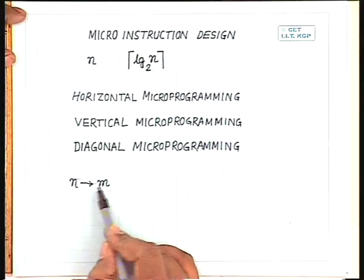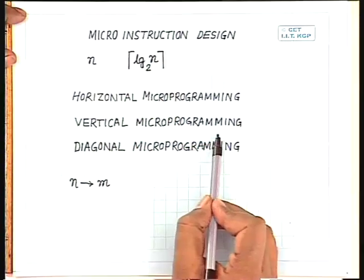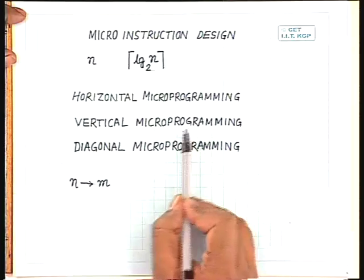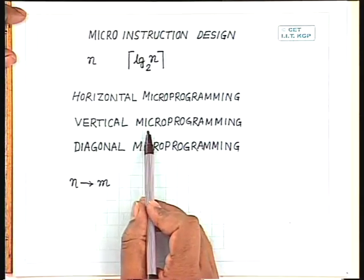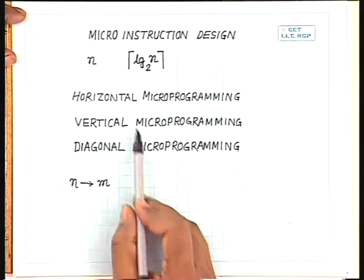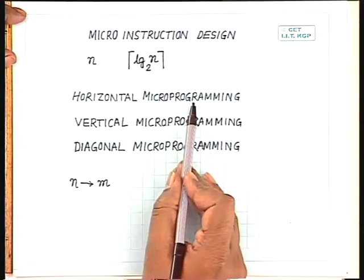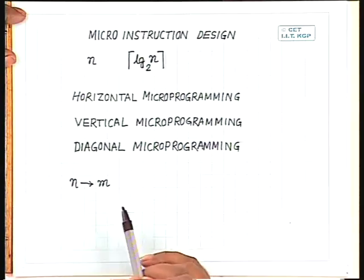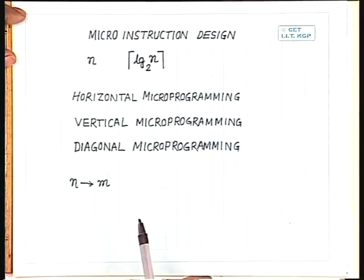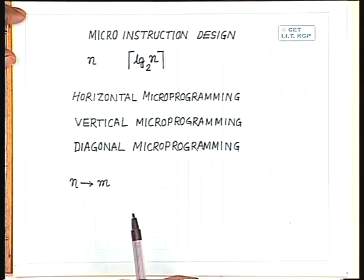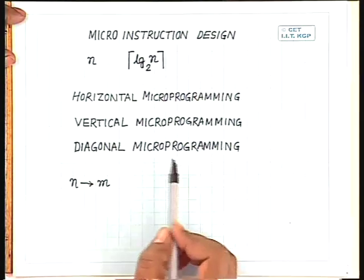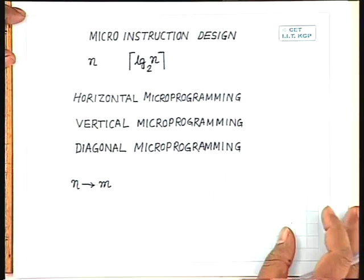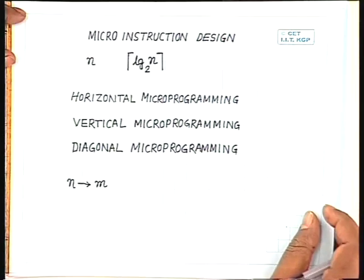So here I can reduce the number of bits, but not as few as in the case of vertical microprogramming. The number of bits in this case will be more than in the case of vertical microprogramming but less than in the case of horizontal microprogramming. So I compromise on the number of bits to attain parallel activation of the control signals. How many fields you should have and how many bits in every field — that is the topic of micro-instruction design. Let us see how we can design the micro-instructions.